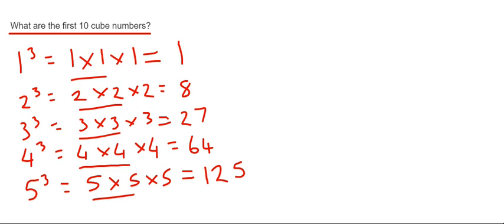OK, so let's do 6 cubed next. So 6 cubed would be 6 times 6 times 6. So 6 times 6 is 36. And times it by another 6 gives us an answer of 216.